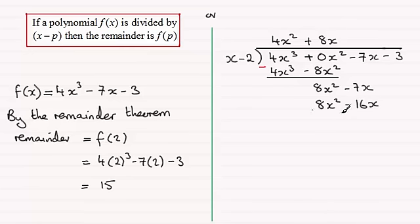And we subtract again to find out what that remainder is. 8x² minus 8x squared. Well that's going to be 0. And now we have minus 7x minus minus 16x which is going to be 9x. Bring down the next term, minus 3.